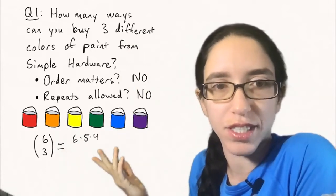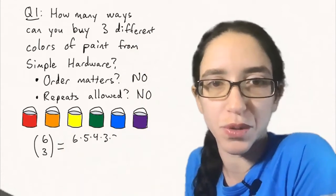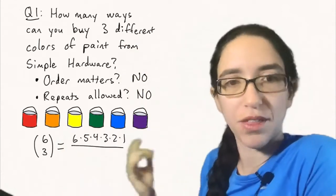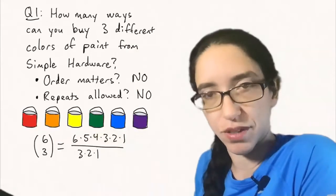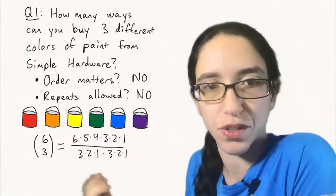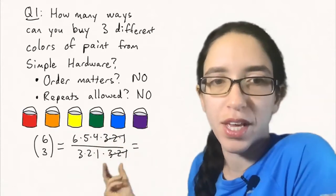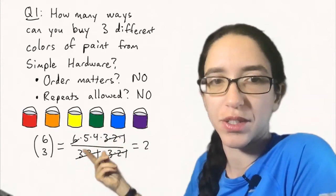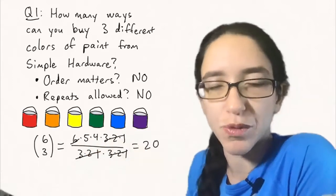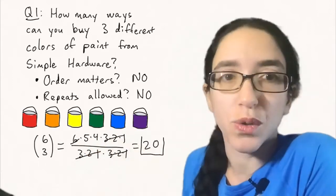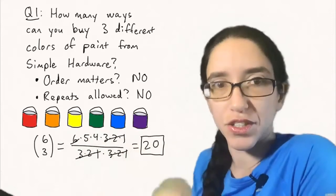So 6 factorial is 6 times 5 times 4 times 3 times 2 times 1. Then you divide by 3 factorial and 6 minus 3 factorial. So 3 times 2 times 1 and another 3 factorial there. The 3 factorials cancel here on the top and bottom and then the other 3 factorial cancels with 6 and so we just get 5 times 4 and that's 20. So 6 choose 3 is 20, that's an answer to this question.